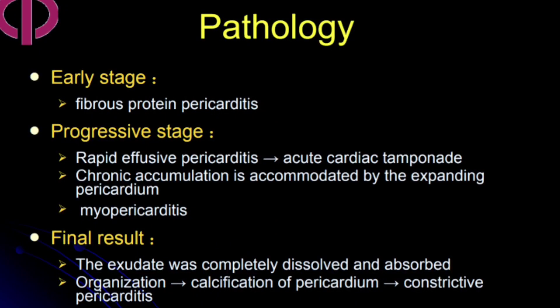Pericarditis has a progression in three stages. The early stage features fibrinous pericarditis with accumulation of fibrous protein in the pericardial sac. In the progressive stage there is rapid effusive pericarditis, which may progress to acute cardiac tamponade, and which can lead to chronic accumulation and expansion of the pericardium, progressing to myopericarditis.